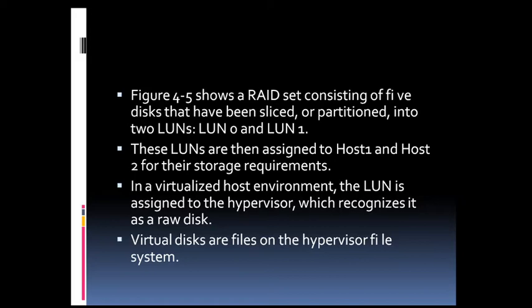In a virtualized host environment, the LUN is assigned to the hypervisor which recognizes it as a raw disk. The hypervisor is a layer between the virtual system and the physical system. This disk is configured with the hypervisor file system and then virtual disks are created on it. These virtual disks are files on the hypervisor file system. The virtual disks are then assigned to a virtual machine and appear as a raw disk to them.